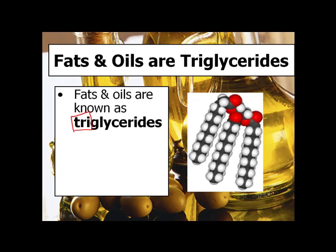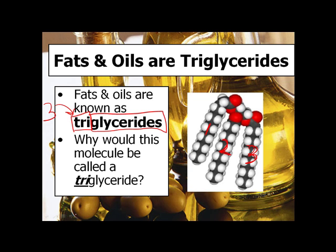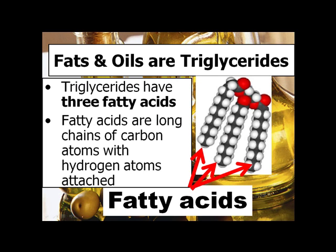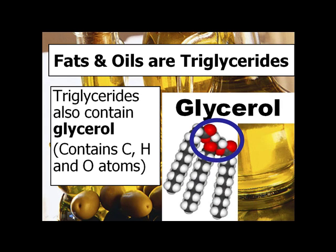Triglycerides is another name for fats and oils. Let's break that word down — tri means three, like a tricycle. Fats and oils have three glycerides. It's called a triglyceride because our main branching molecule, the glycerol, has one, two, three fatty acids hanging off of it. A fatty acid is a long chain of carbon with a whole bunch of hydrogens clinging to it. The oxygen is only in the glycerol, and the CH's make up fatty acids almost entirely.